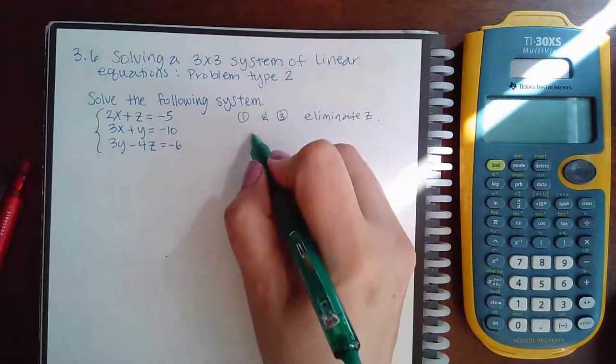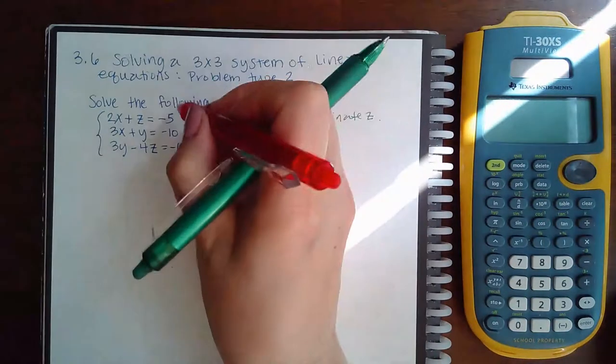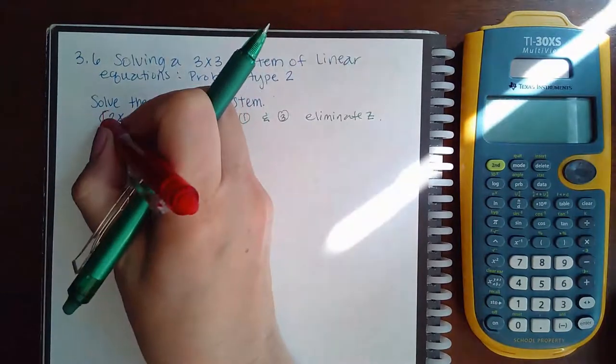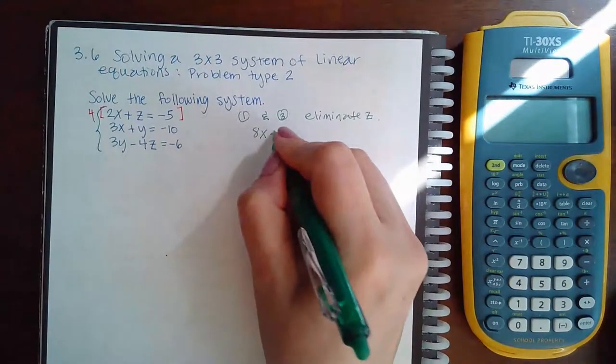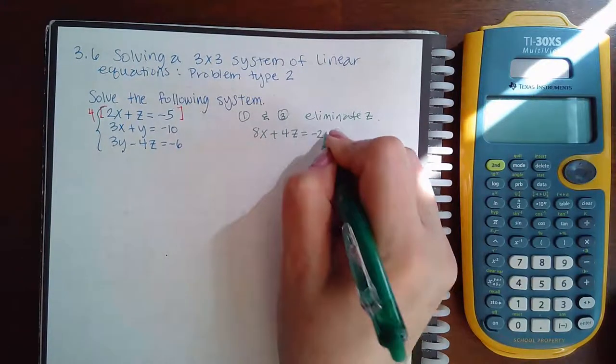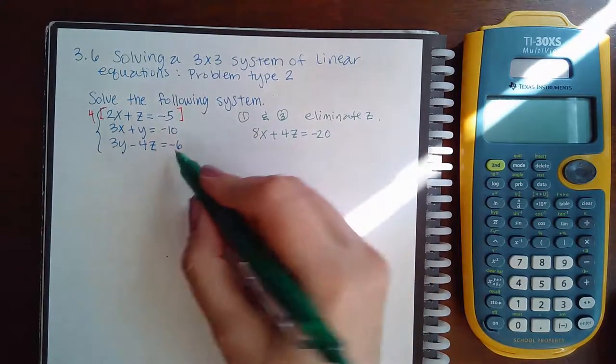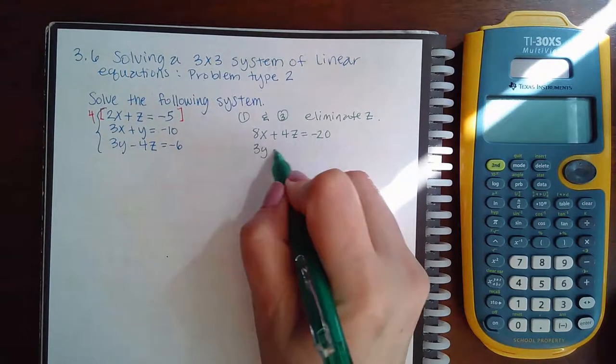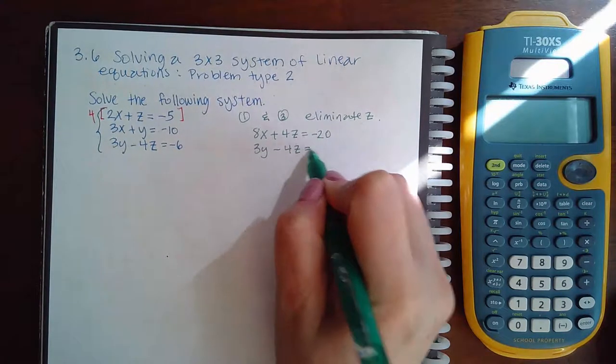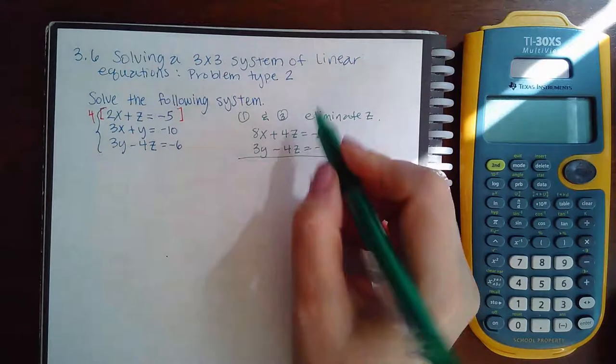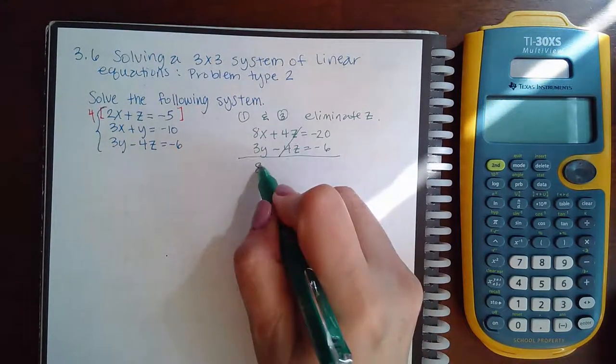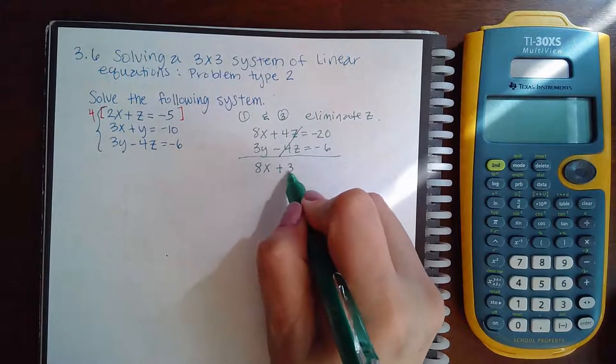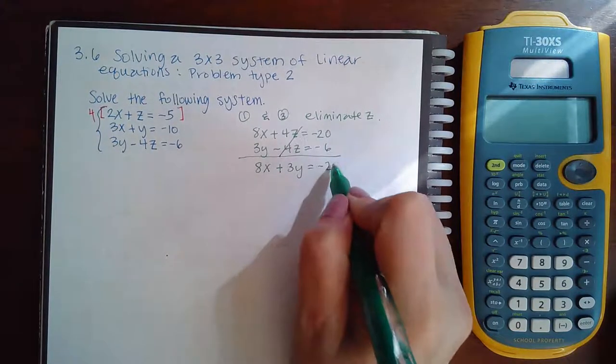So when I do that I'm going to multiply this top one by 4. So I get 8x plus 4z equal to negative 20 and the third equation is 3y minus 4z equal to negative 6. Now the z's will cancel but these do not combine. It's just a positive 8x and a positive 3y equal to negative 26.